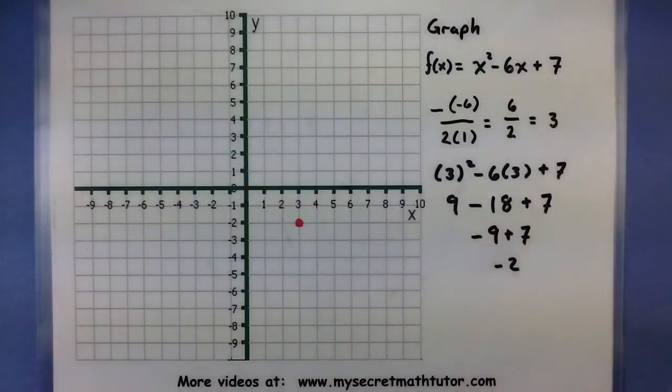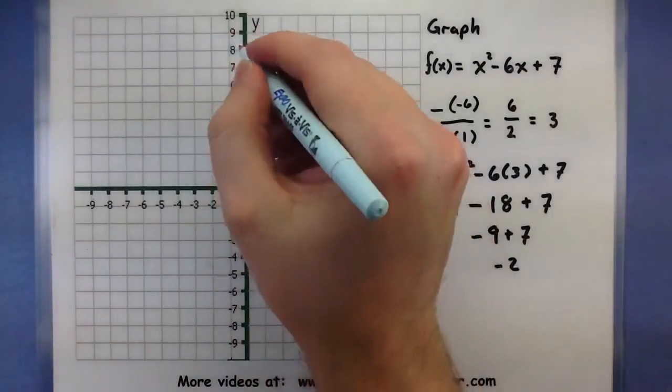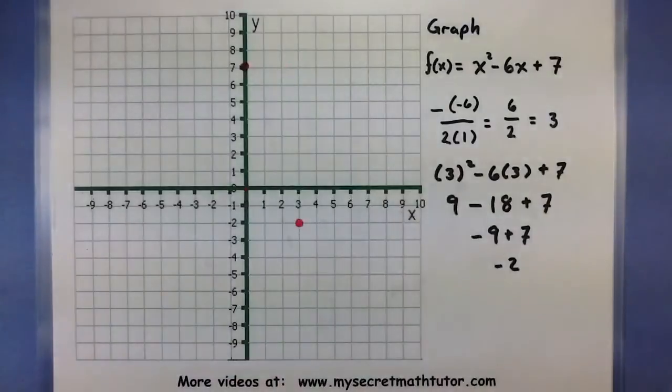Now, it would be really nice to know how skinny or wide it is, and to do that we need at least another point on here. The 7 will tip us off on where it crosses the y-axis. So let's put a point there. Now that gives us a lot of information as to what our parabola looks like.